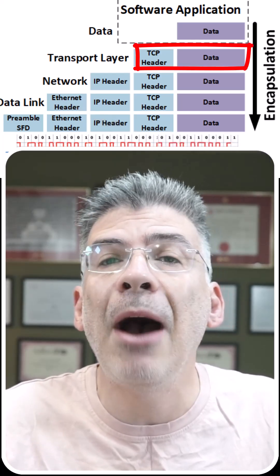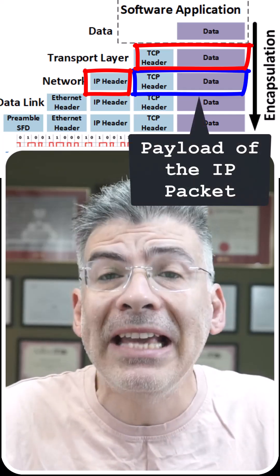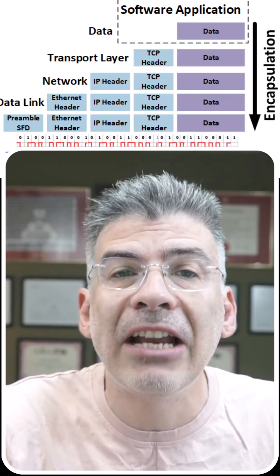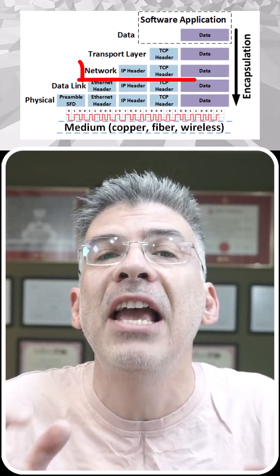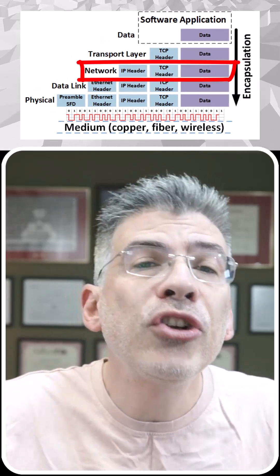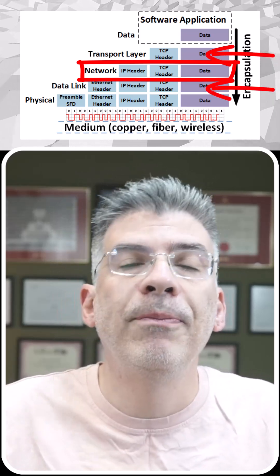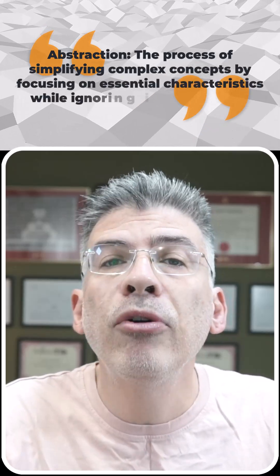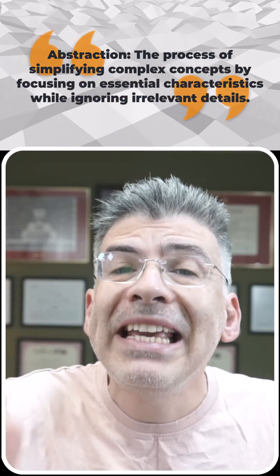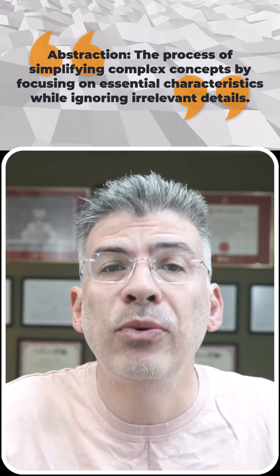Each layer treats everything above it as just data, or simply as the payload. And that's the great thing about these layered models — each layer only cares about the processes involved within it. It doesn't concern itself with what's happening in the layer above or the layer below. This is called abstraction. By keeping the responsibilities of each layer separate, protocols can be developed, improved, or replaced independently, as long as they respect the interface between layers.